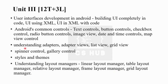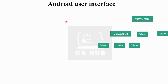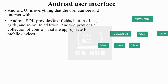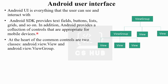Android UI is everything that the user can see and interact with. The Android SDK provides different UI elements such as text field, button, list, grid, and so on. In addition, Android provides a collection of controls appropriate for mobile devices. At the heart of the common controls are two classes.